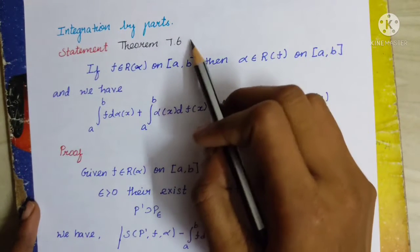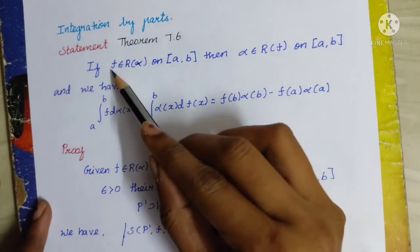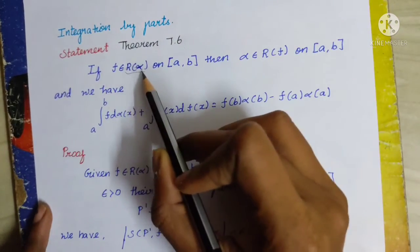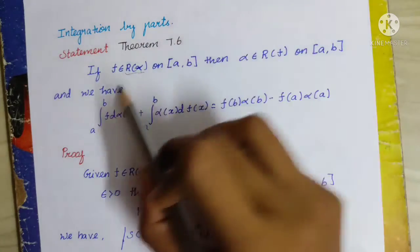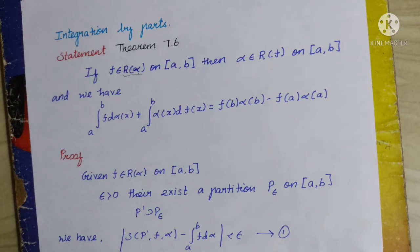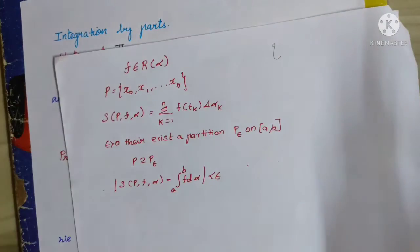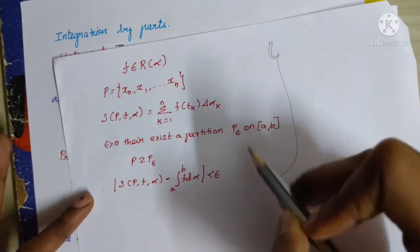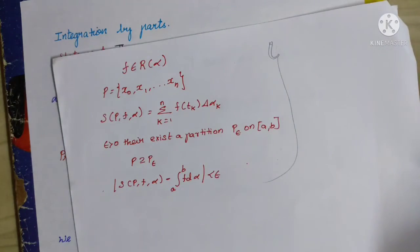The theorem is 7.6. If f belongs to R(alpha), where R(alpha) is the Riemann-Stieltjes integral, then f is Riemann-Stieltjes integrable. You will know about the Riemann-Stieltjes integral — it must satisfy a certain condition.